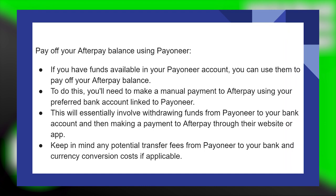To do this, you will need to make a manual payment to Afterpay using your preferred bank account linked to Payoneer. This will essentially involve withdrawing funds from Payoneer to your bank account and then making a payment to Afterpay through their website or application.